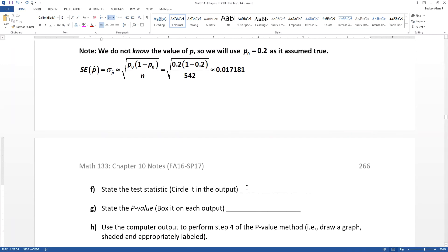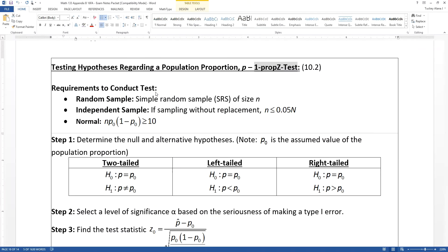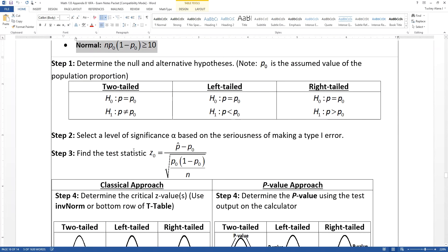Now the test statistic. Let me remind you where that comes from in the process. The test statistic is Z₀, which is your step 3. So technically it's P-hat minus P₀ over the square root of blah blah blah.